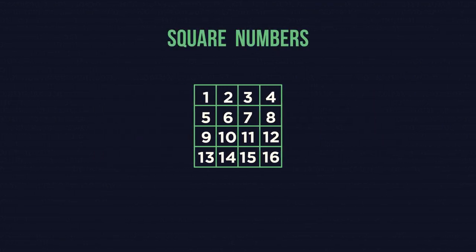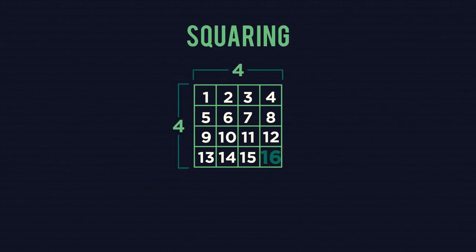A square number is the result of multiplying an integer by itself, a process known as squaring. For example, 4 times 4 equals 16, so 16 is a square number.